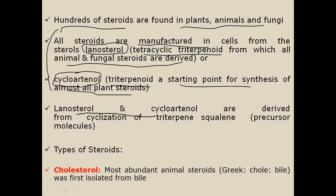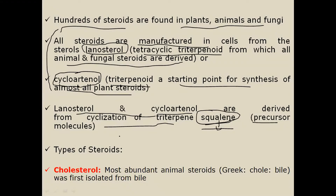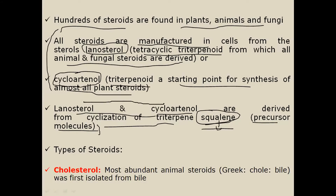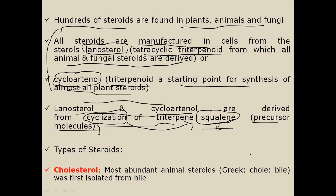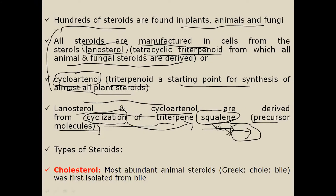Lanosterol and cycloartanol are both derived from the cyclization of the triterpene named squalene. Squalene is a type of terpene and is the precursor molecule for the formation of steroids. When the squalene structure is converted into a cyclic structure, it results in the formation of different types of steroids. Squalene was originally obtained from the liver oil of sharks and other fishes, and is also obtained from different types of plants.